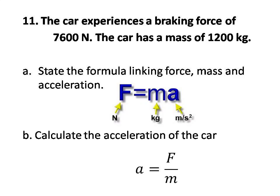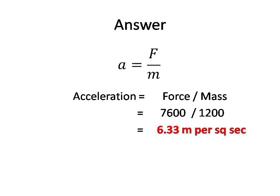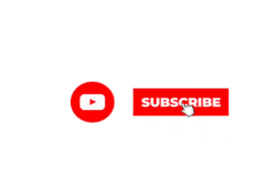Question number eleven B. The car experiences a braking force of 7,600 newtons and has a mass of 1,200 kilograms. Calculate the acceleration of the car. Answer is 6.33 meters per second squared. It is obtained from the formula: acceleration equals force divided by mass.